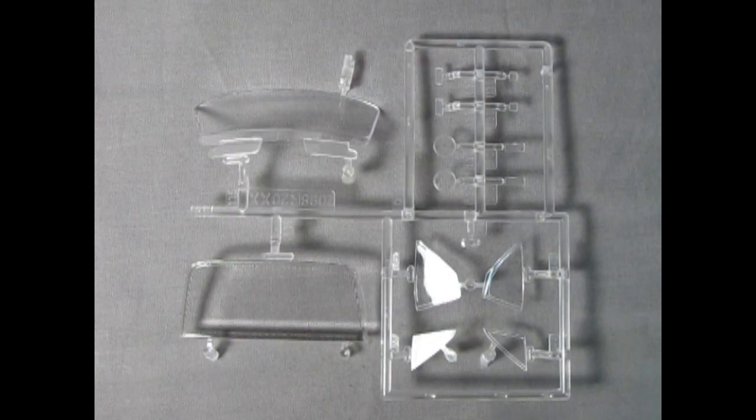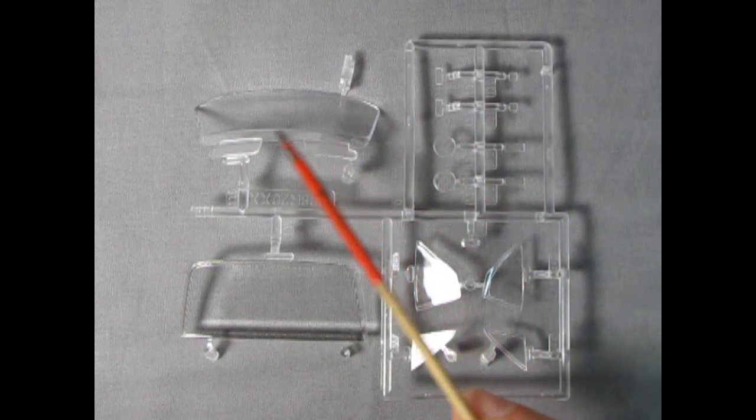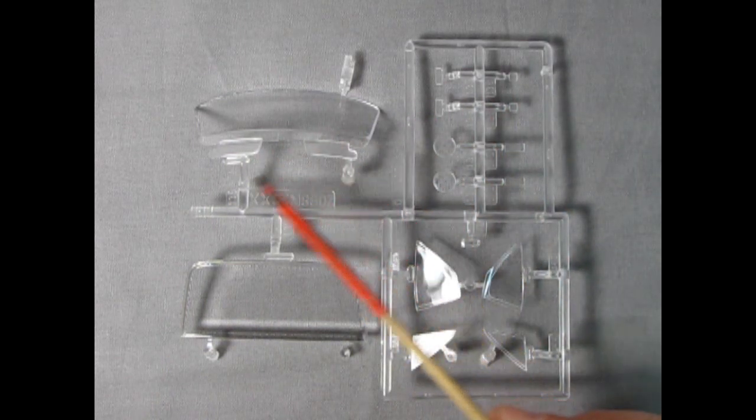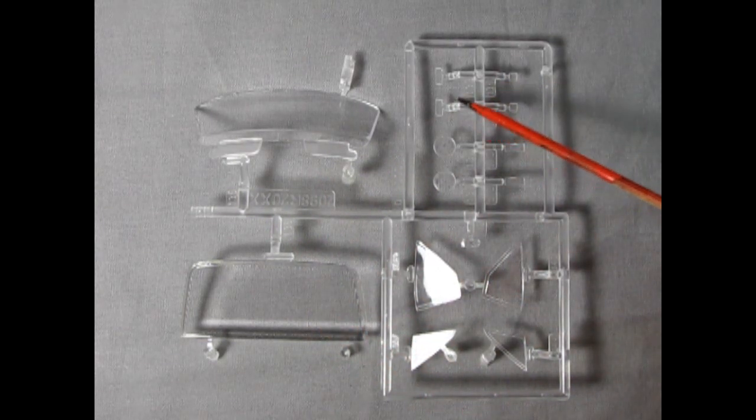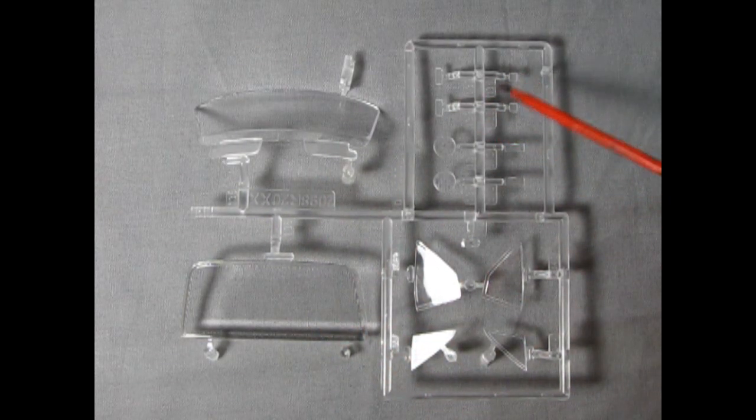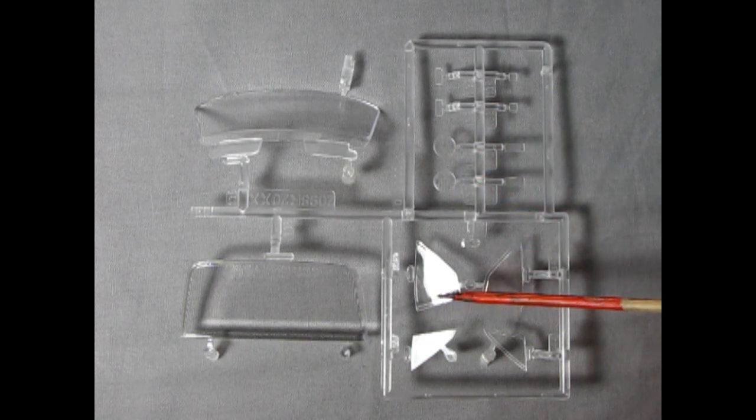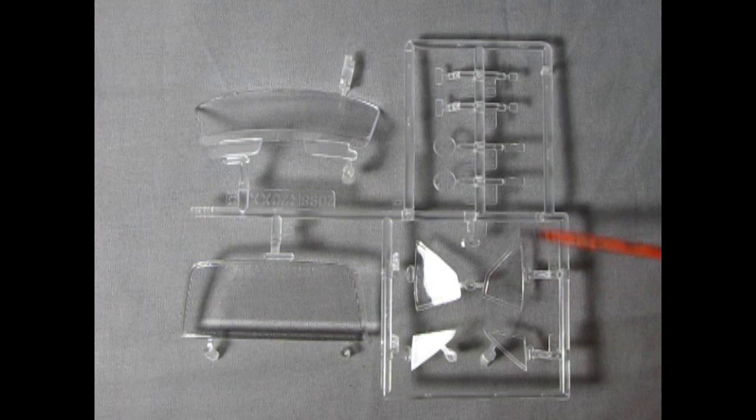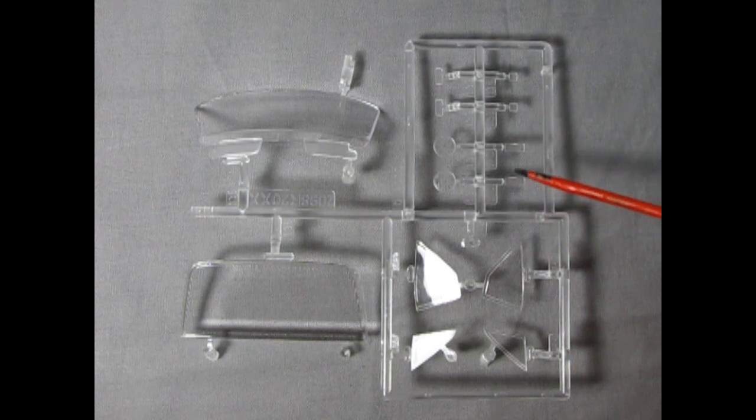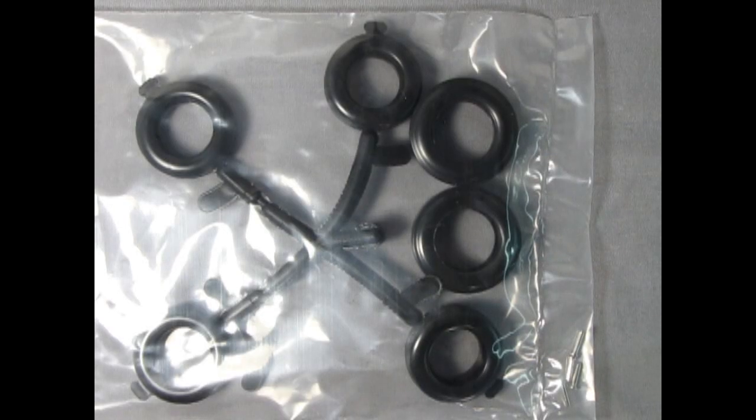Next up we have the pieces that make up our glass. These of course are molded in clear plastic. We have the front windshield with sun visors which you need to paint, the rear glass. We also have our side marker lights and our backup lights as well as the headlights and the side glass. None of these parts are molded in transparent red so you either have to paint them or use the kit supply decals.